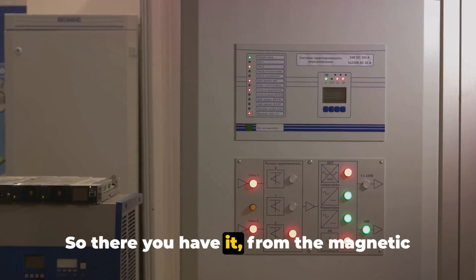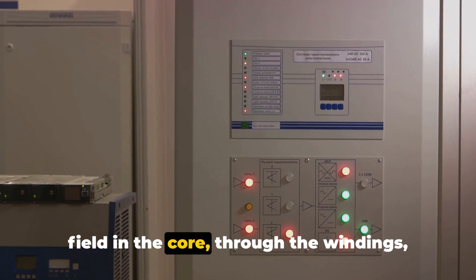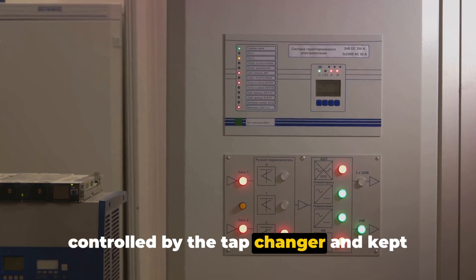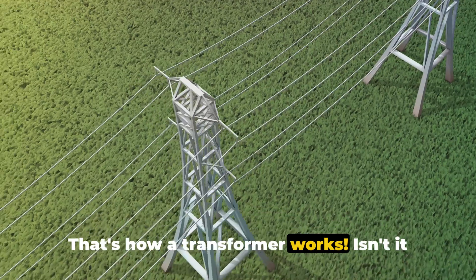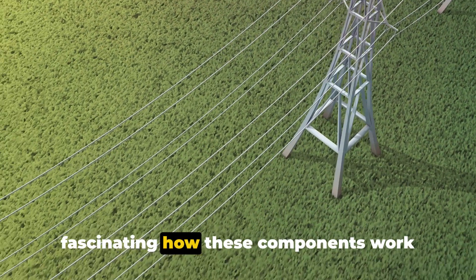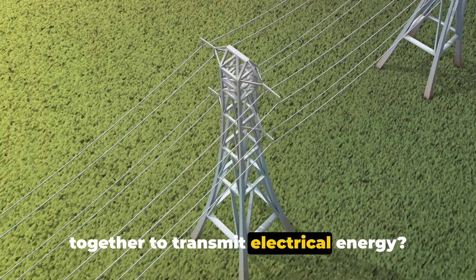So there you have it. From the magnetic field in the core, through the windings, controlled by the tap changer, and kept cool by the cooling system. That's how a transformer works. Isn't it fascinating how these components work together to transmit electrical energy?